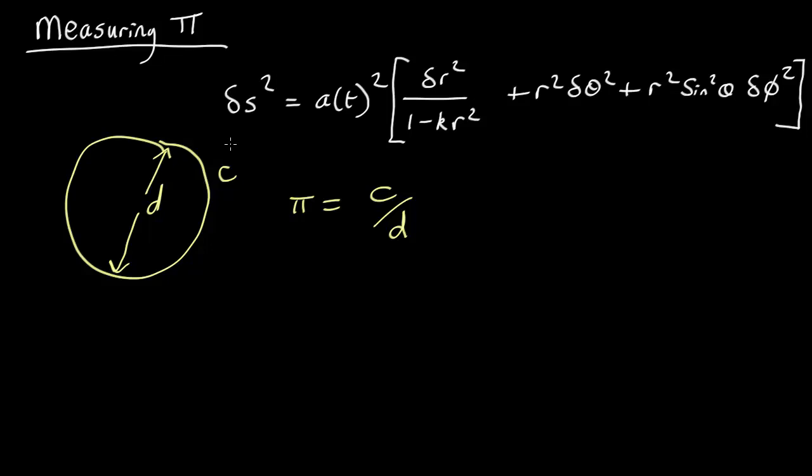Well, let's calculate what we'd get if we assume that this Robertson-Walker metric is correct. So we've got a circle. We can pick a circle anywhere we like because we're assuming space is uniform and isotropic.